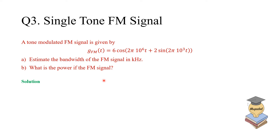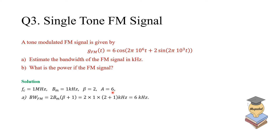For the solution to part A: the carrier frequency is 1 MHz, the bandwidth of the message is 1 kHz. From there you can find the frequency deviation and find beta to be 2. The amplitude is 6. Using Carson's rule by substitution, the correct bandwidth is 6 kHz. For the power of the FM signal, it's amplitude squared over two: 6 squared is 36, divided by 2 is 18. Now let's move to the more challenging question four.